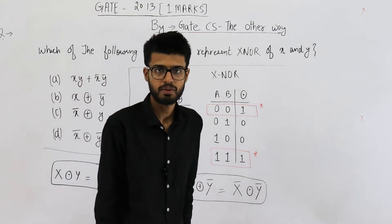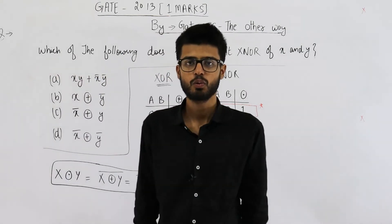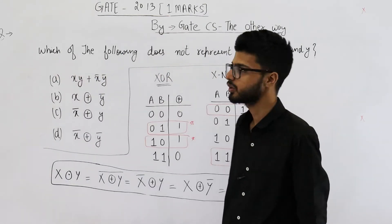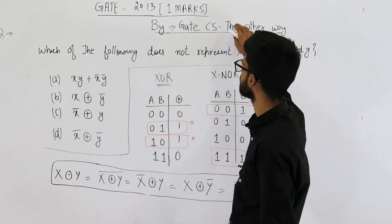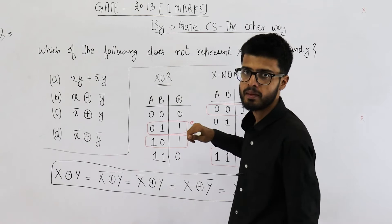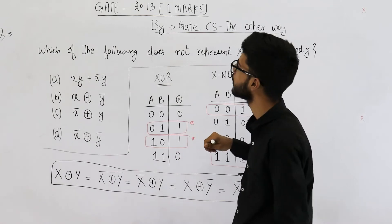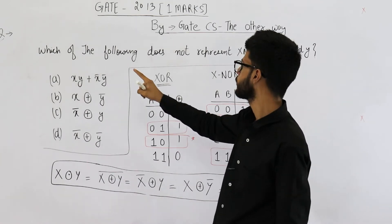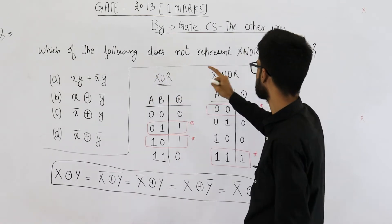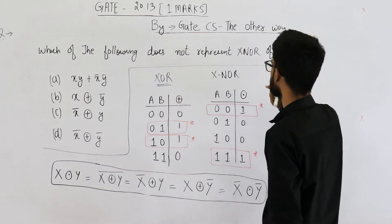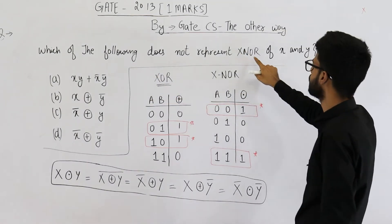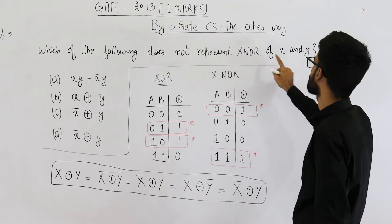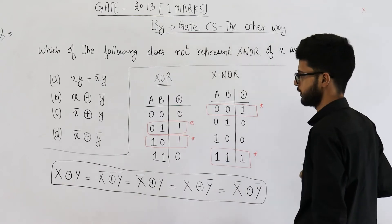Hello students, welcome back. I have a question from the Gate 2013 exam. It's for one mark. They're asking which of the following does not represent X-NOR of X and Y.